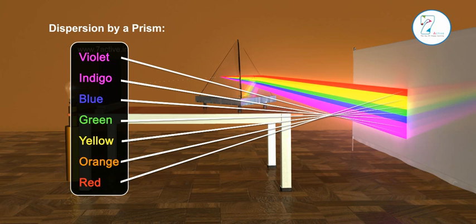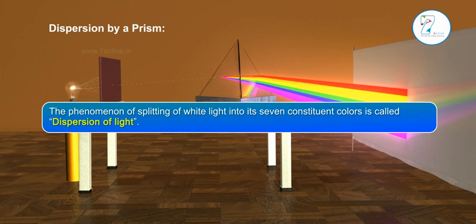This phenomenon is called dispersion of light. The phenomenon of splitting of white light into its seven constituent colors is called dispersion of light.